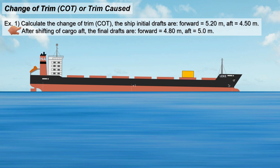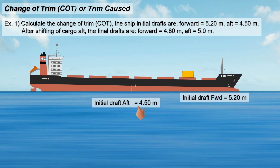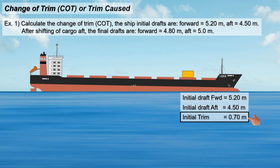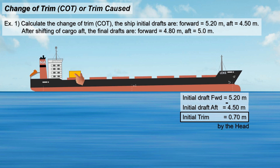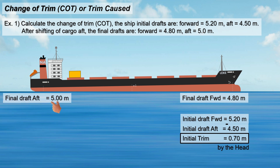Let's consider this scenario. Calculate the change of trim if the ship's initial draft forward is 5.20 meters and the initial draft aft is 4.50 meters. The ship's initial trim is 0.70 meter — just subtract the lesser from the greater. Since the forward draft is greater than the aft draft, the ship's initial trim is by the head. After shifting the cargo aft, the final draft forward is 4.80 meters and the final draft aft is 5.0 meters.